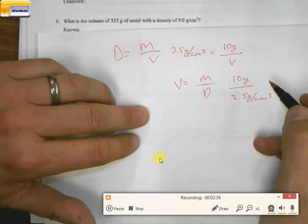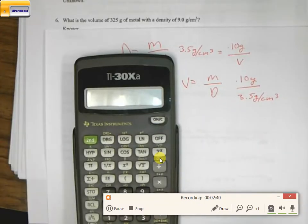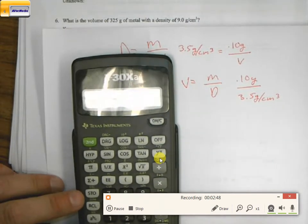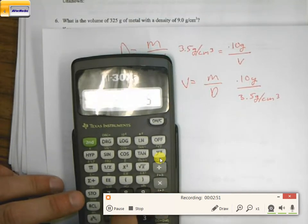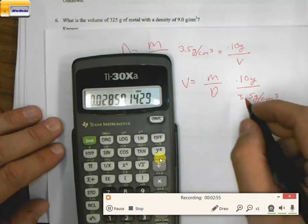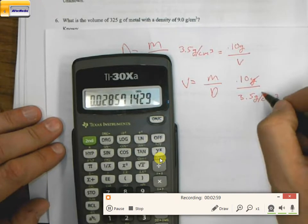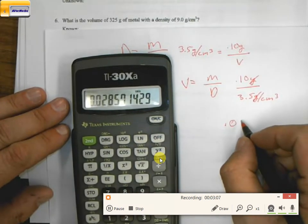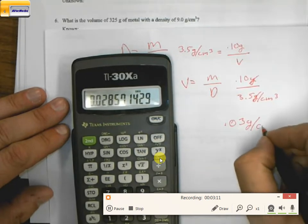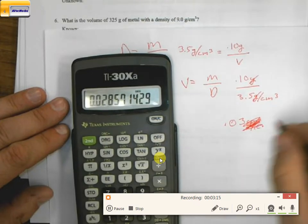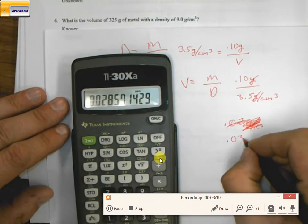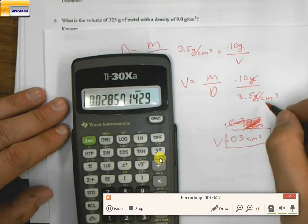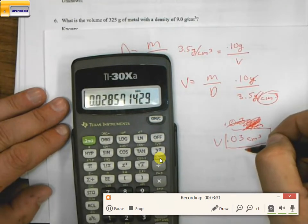So now I just do my math: 0.10 divided by 3.5. I know that grams divided by grams equals 1, so my units are going to be in centimeters cubed. So what I have is 0.03 centimeters cubed — that's your answer, that's your volume. Because you crossed off your grams, and so now all you have is cubic centimeters: 0.03 cubic centimeters.